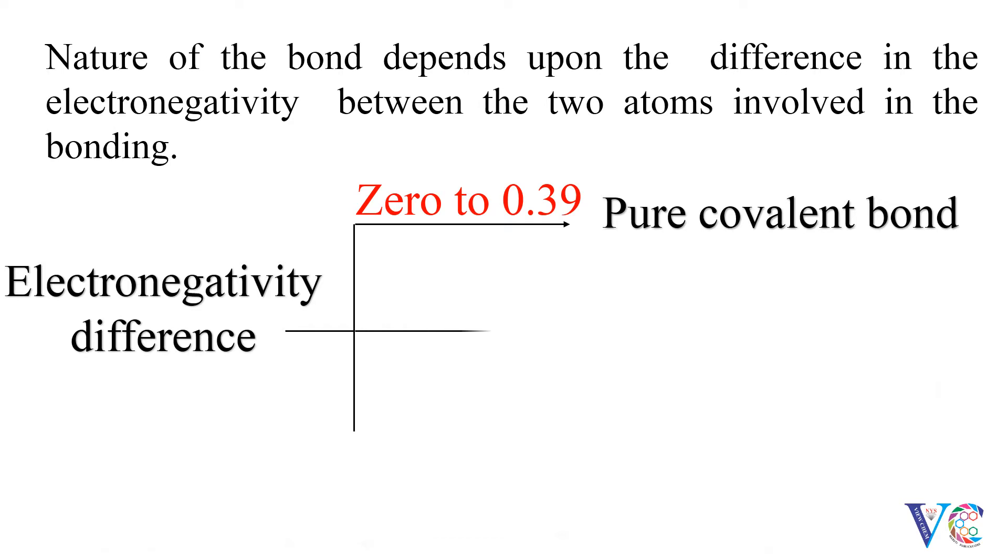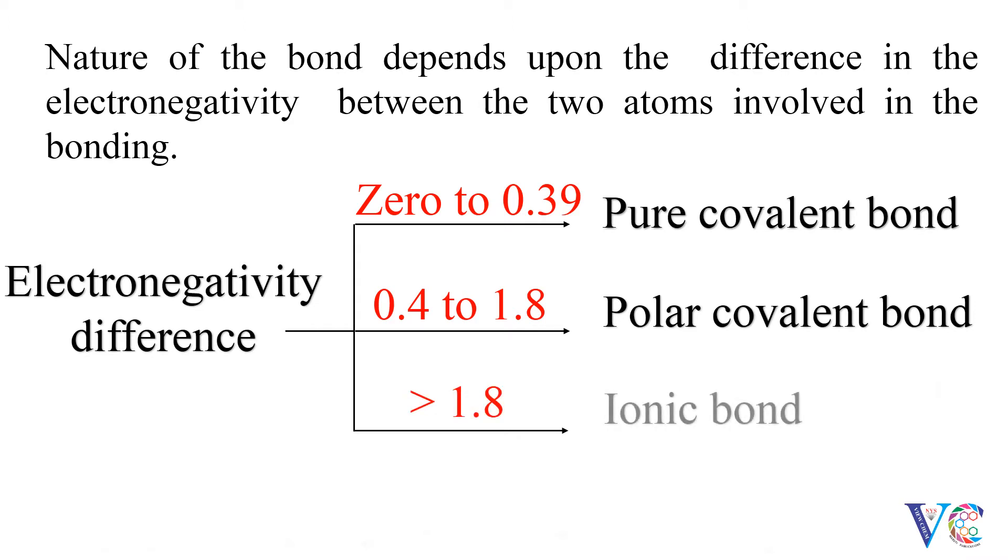If the electronegativity difference is 0.4 to 1.8, a polar covalent bond results. If the electronegativity difference is more than 1.8, then ionic bond formation takes place.